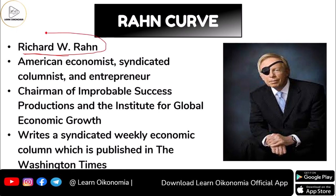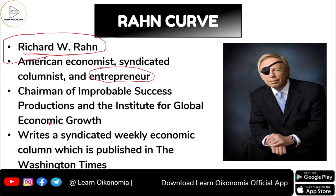The Rahn Curve is named after Richard W. Rahn. This person is the propounder of the idea of the Rahn Curve. He is an American economist and a syndicated columnist who also acts as an entrepreneur with several businesses. He is the chairman of Improbable Success Productions as well as the Institute for Global Economic Growth.